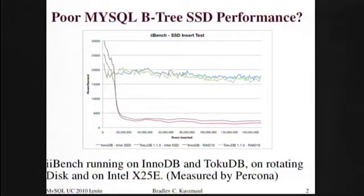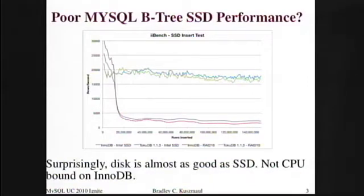One of them is SSD and one of them is a rotating disk. The SSD is a little faster — up is good. How come we're faster on rotating disk than InnoDB is on SSD? And why isn't InnoDB getting good performance? It's still a little bit of a puzzle.